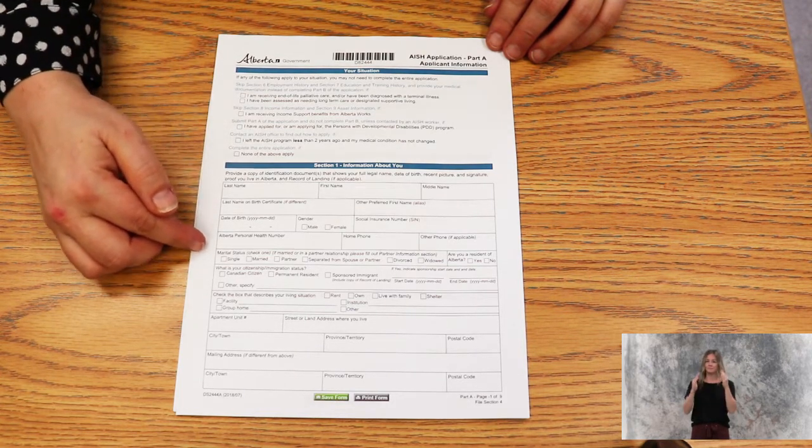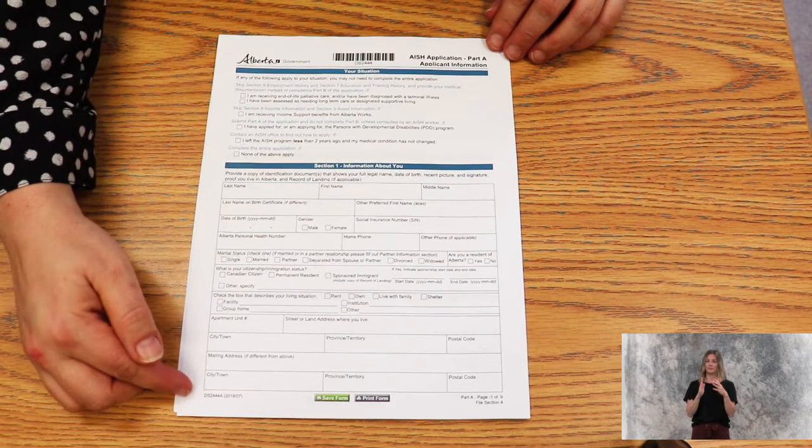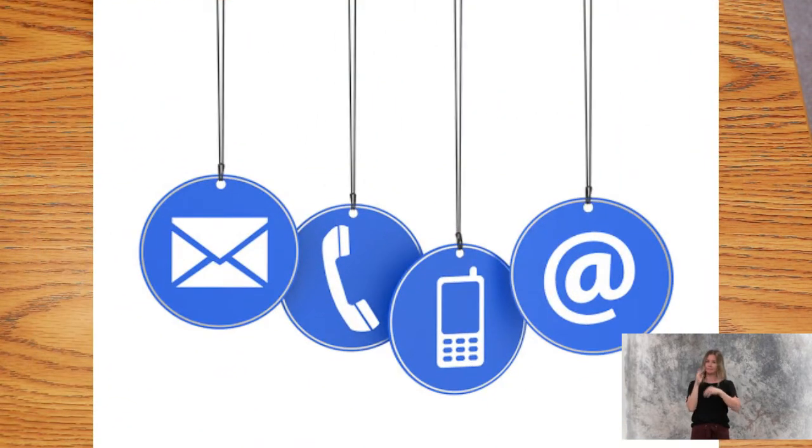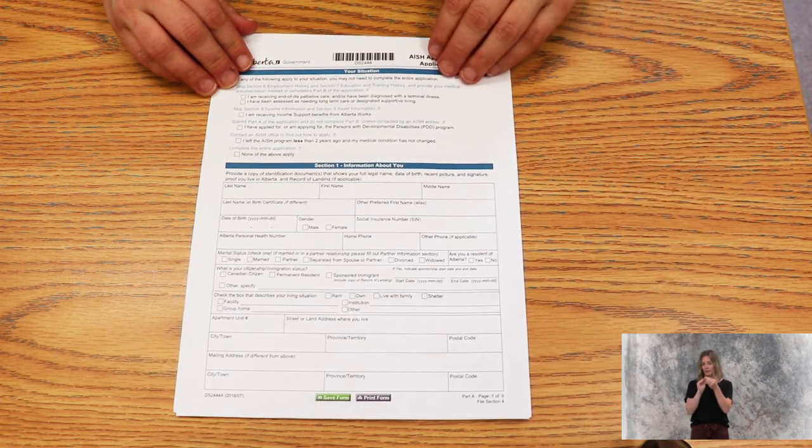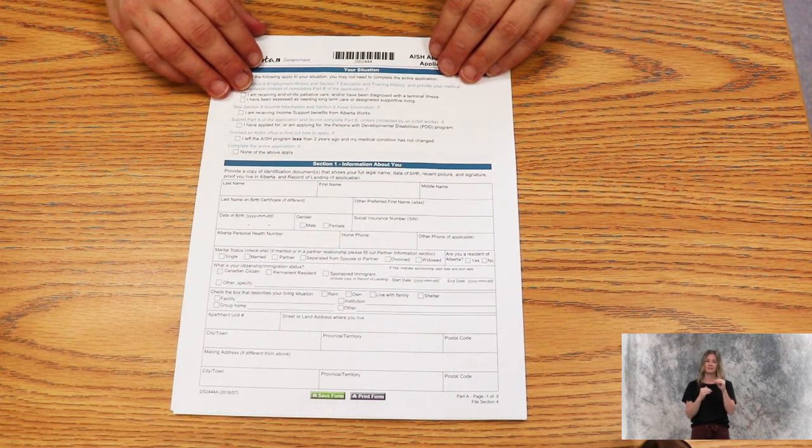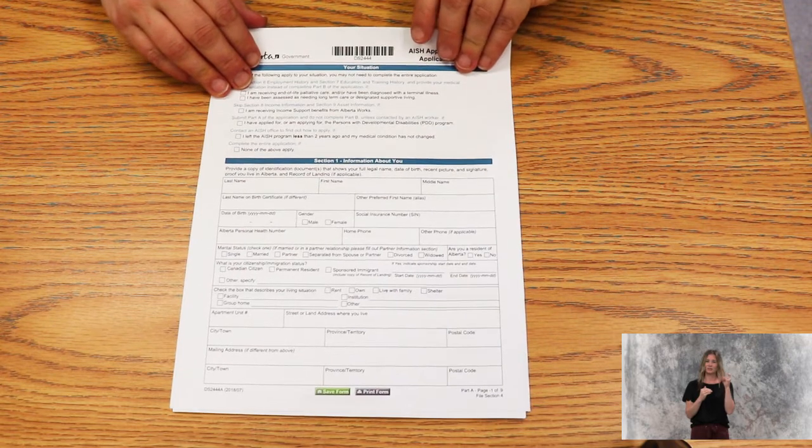You'll then proceed to fill in the required information for contact information: name, address, social insurance number, personal health care number, marital status, citizenship, living situation, and so forth.